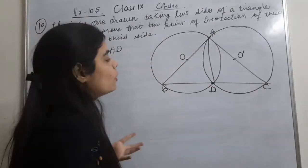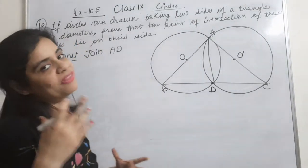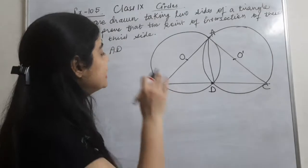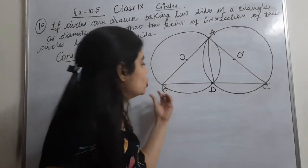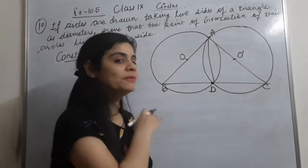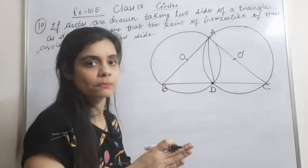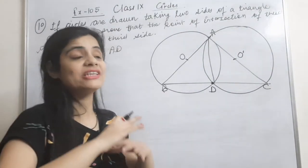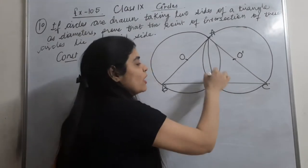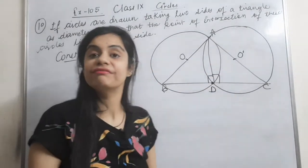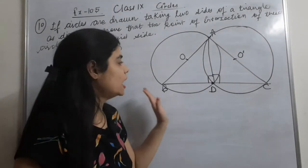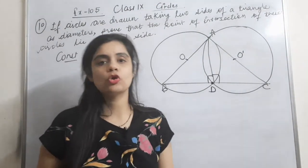What we basically need to prove is that BDC is a straight line, that is, D lies on BC. To prove this, if I can show that the sum of angles BDA and ADC is 180 degrees, then BDC is a straight line and D lies on BC.